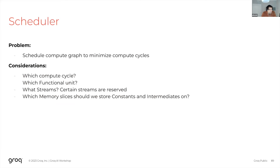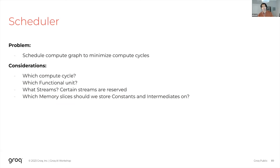I have an analogy here. The scheduler is almost like planning a road trip where we want to visit Barcelona, Rome, and Copenhagen. We have a rough order of which cities to see first, but we haven't booked our Airbnbs, flights, or buses. We still need to figure out if it's feasible and the best way to get between these places.